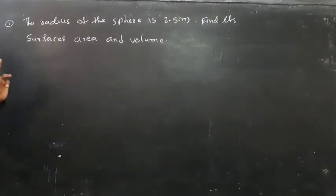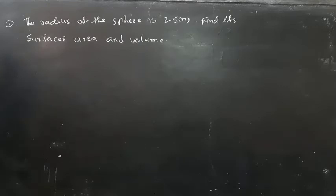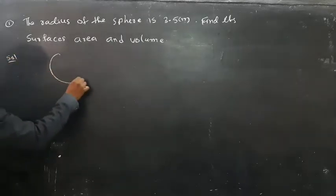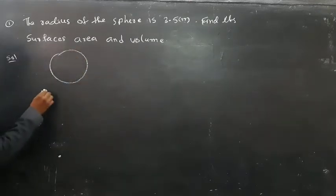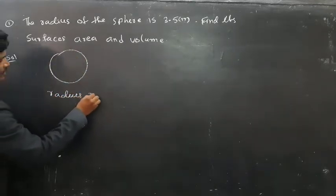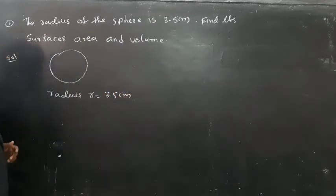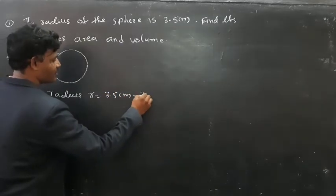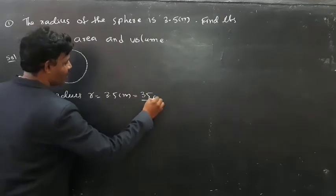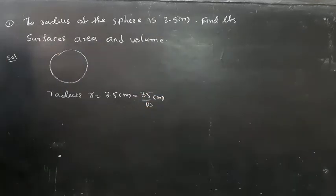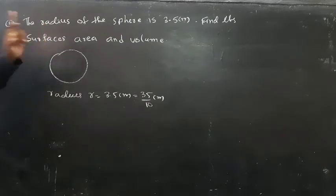The radius of the sphere is 3.5 cm. Find its surface area and volume. In the solution, the radius r is equal to 3.5 cm. I am going to convert this as a fraction, so we write it as 35/10 cm. I need to find the surface area and also the volume.